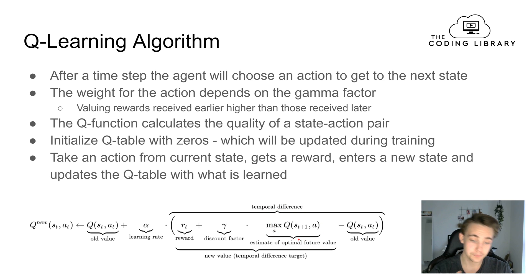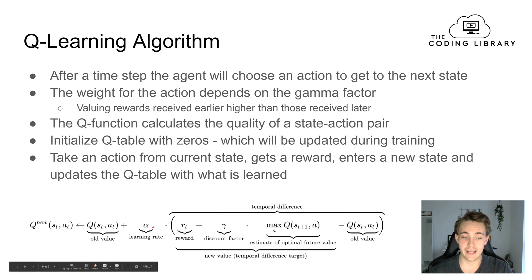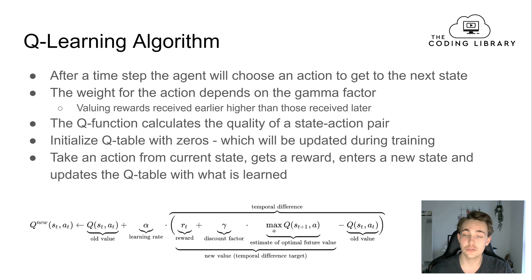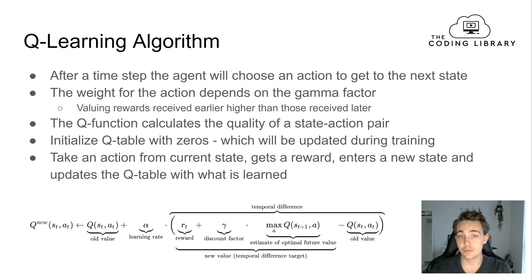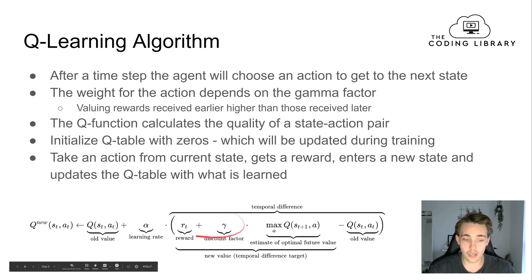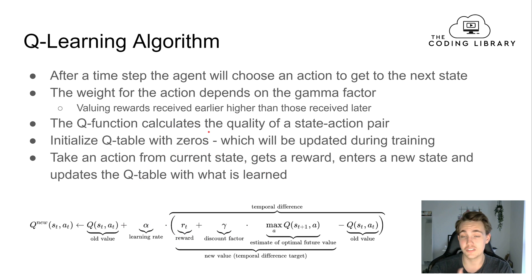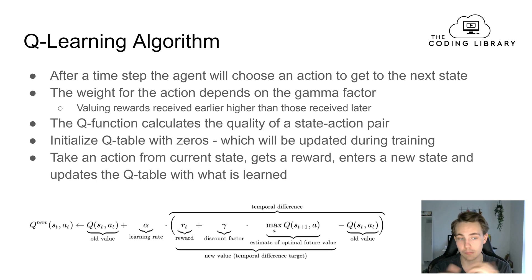This temporal difference value is scaled by alpha to determine how fast we want to learn. We're going to do a lot of tests to find the optimal values for all these parameters. The Q-function calculates the quality of a state-action pair, and for each state-action pair we update our Q-table with that quality value.